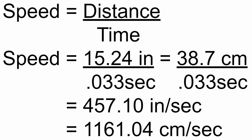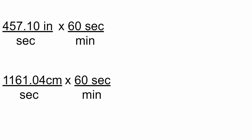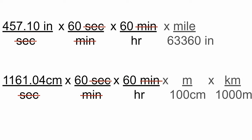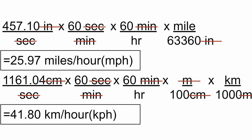I know this doesn't really make sense to us, so let's go ahead and do the conversion to something we are familiar with. I multiply by 60 seconds per minute, then 60 minutes per hour, then 1 mile per 63,360 inches, which equates to 25.97 miles per hour.